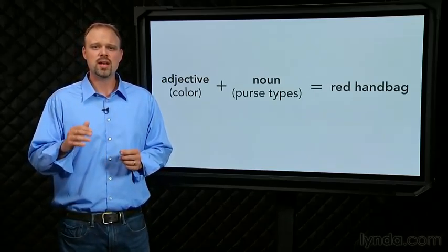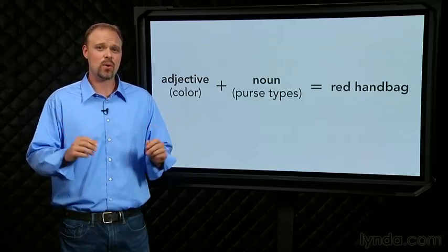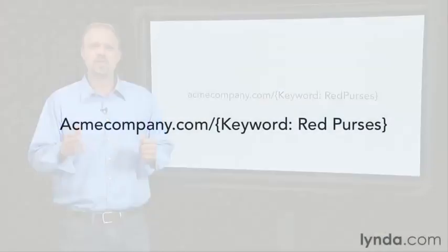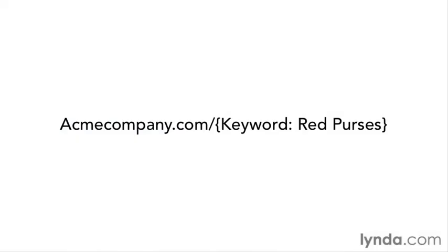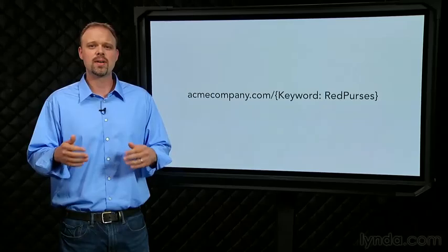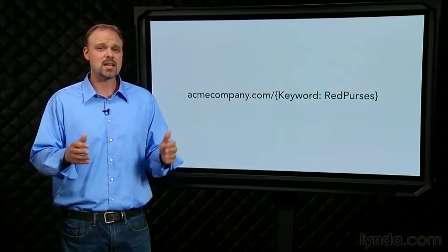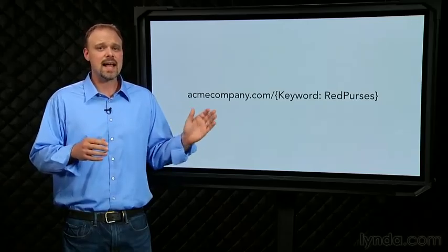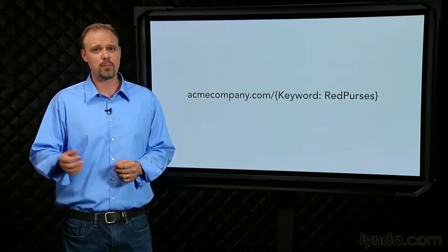Now here's a tip. You can actually use DKI anywhere in the ad text, including the display URL. And remember, the display URL is just what the user sees. It doesn't have to be a real URL. So your ad could show a destination URL of slash maroon handbags to people looking for maroon handbags and slash red purses to people looking for red purses.